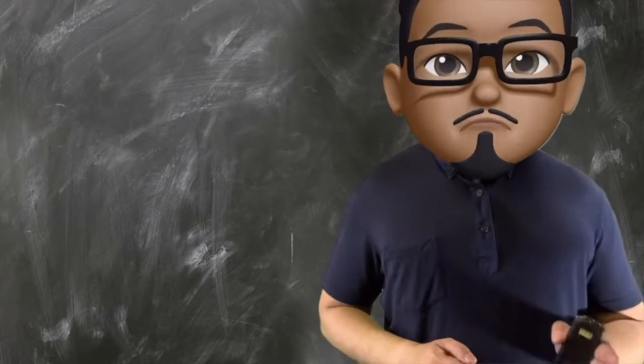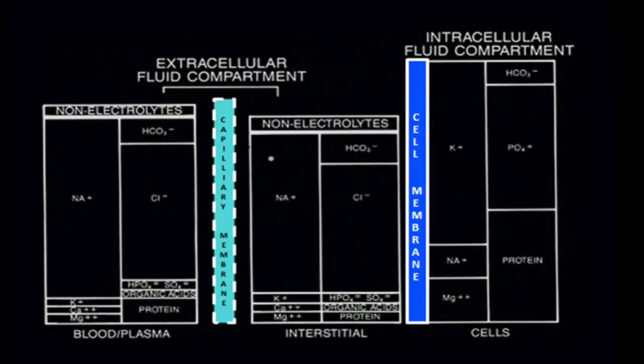The cell membrane separates your ECF from your ICF, while your plasma volume is separated from your interstitial fluid by your capillary membrane. And as you can see, the most common cation in the ECF is sodium,